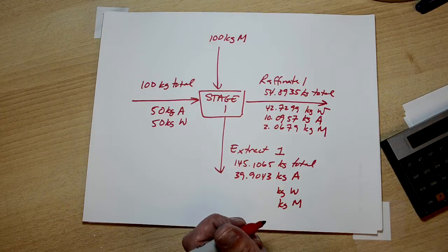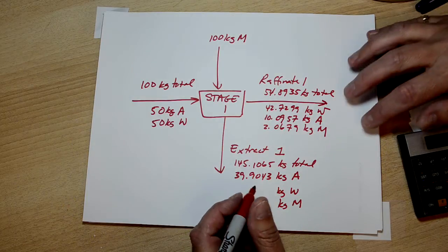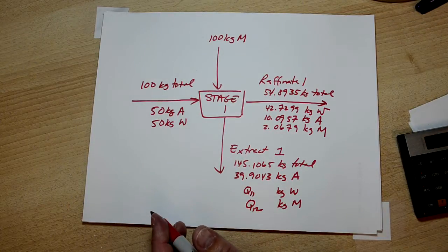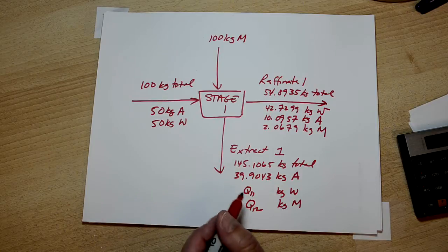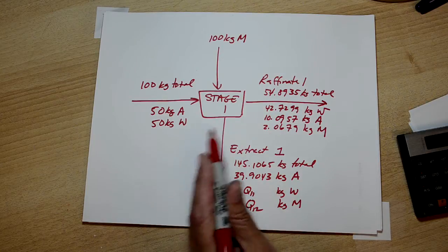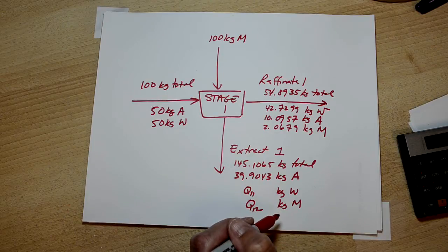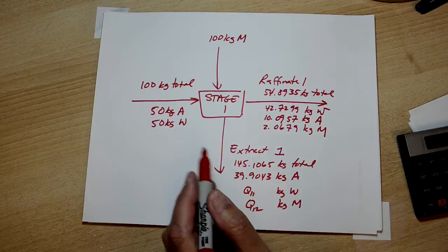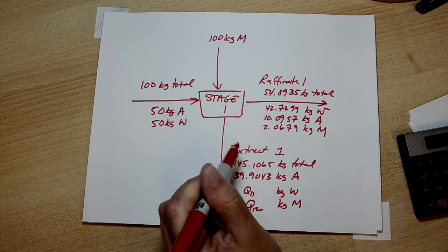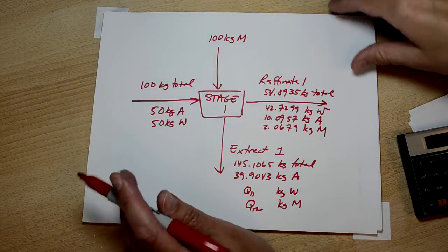So we can go Q11 and Q12. So we're really very close to the end here. We just need to do a water balance and an MIBK balance to get the last pieces together. We could maybe do the acetone balance too, just to double check that we haven't made any mistakes. And we can do the overall balance to double check that we haven't made any mistakes.